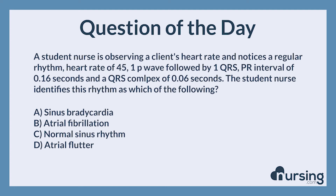The correct answer is A, sinus bradycardia. The characteristics of regular rhythm, heart rate of 45, one P wave followed by one QRS, PR interval of 0.16 seconds, and a QRS complex of 0.06 seconds are all consistent with sinus bradycardia.